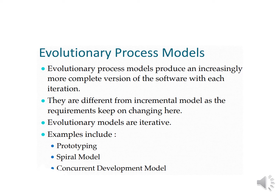In the incremental model, different types of increments are defined for every module as small modules. In the evolutionary process model, a number of iterations are defined. The five stages — communication, planning, design, construction, and deployment — are common in this model as well. The difference lies in how those models are designed and handled.